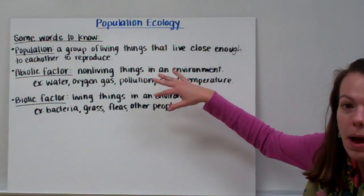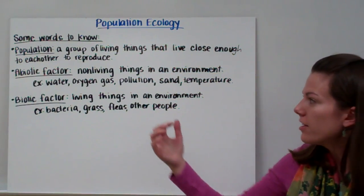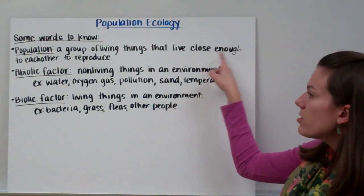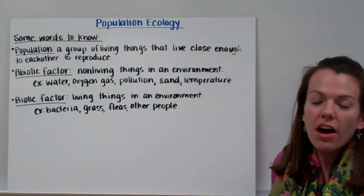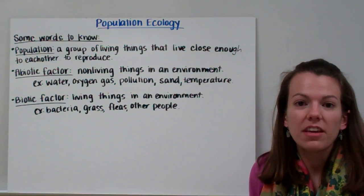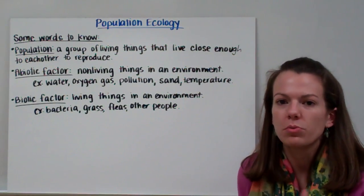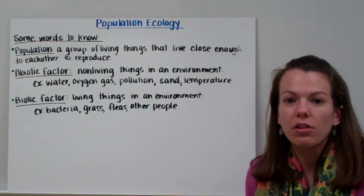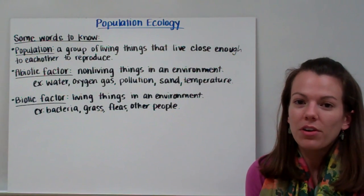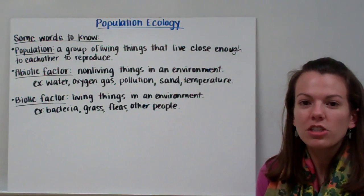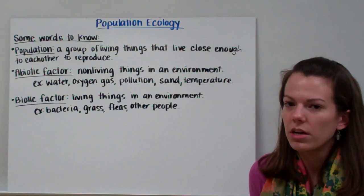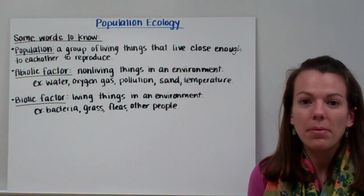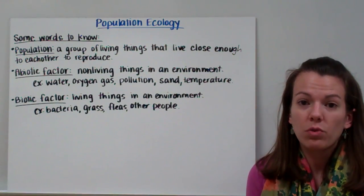There are a few words you need to know before we get into the content. The first is a population. A population is a group of living things that live close enough to each other to reproduce. Those living things have to be the same species — a dog can't reproduce with a cat. A dog's population consists of dogs in the surrounding neighborhoods, but not all the way to California, because those dogs aren't close enough to reproduce.